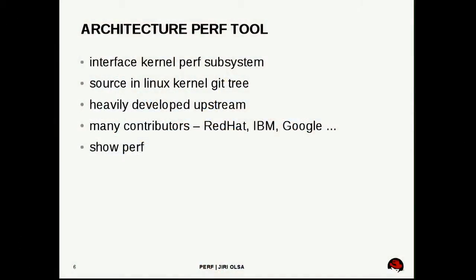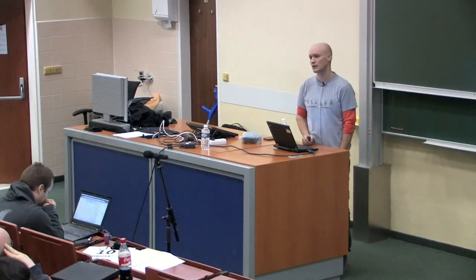The tracer user space is an application using this perf event interface. The perf tool is one of many tools available to interface with the perf subsystem. The source of the perf tool is in the Linux kernel tree, and it's currently under very heavy development with many changes each release and many contributors like Red Hat, IBM, and Google.